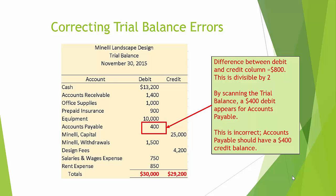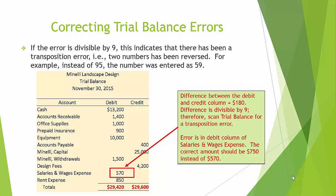If the error is divisible by 9, this indicates a transposition error — that is, two numbers have been reversed. For example, instead of 95, the number was entered as 59. In this case, the difference between the debit column and the credit column is $180, which is divisible by 9. Therefore, we scan the trial balance looking for a transposition error. We see a number next to Salaries and Wages Expense of 570 — the correct number should be 750. By entering the correct number, our trial balance will now balance.